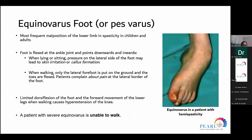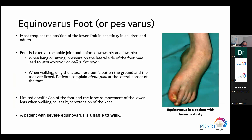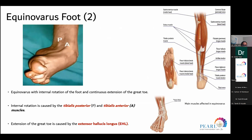First, equinovarus foot — the most frequent malposition of the lower limb in spasticity in children and adults, where the foot is flexed at the ankle, pointing downward and inward. If lying or sitting, this causes pressure on the lateral side leading to skin irritation and callus formation. When trying to walk, there will be pain at the lateral border of the foot, and patients with severe equinovarus will be unable to walk. The targeted muscles causing internal rotation are the tibialis anterior and tibialis posterior, which can be addressed by physiotherapy and other modalities.